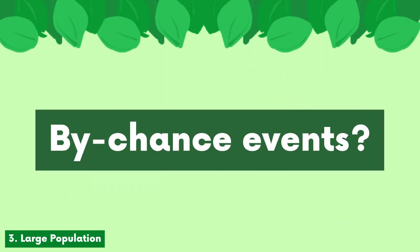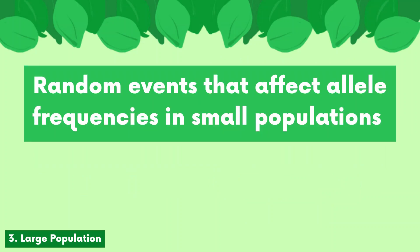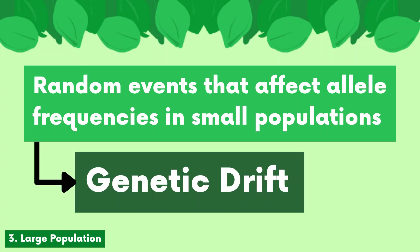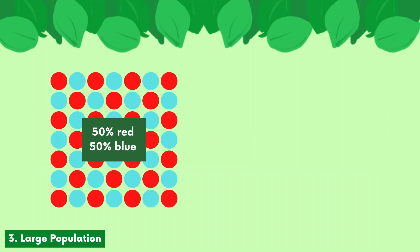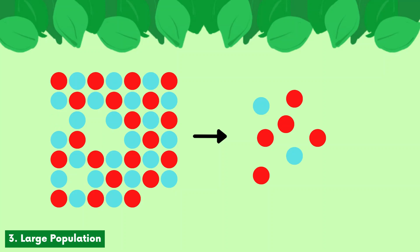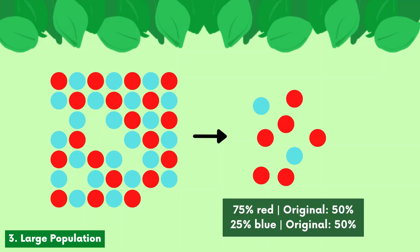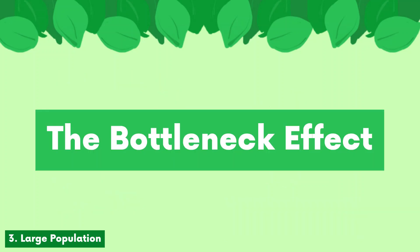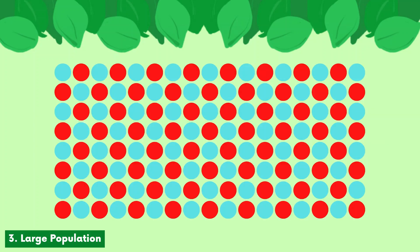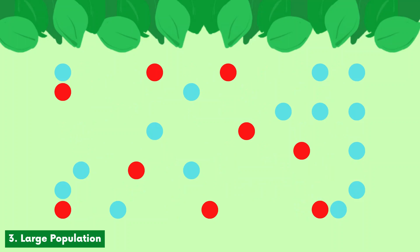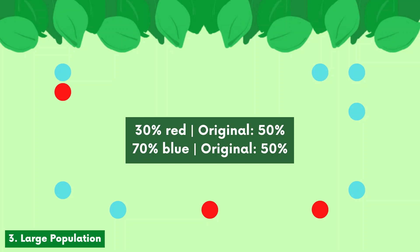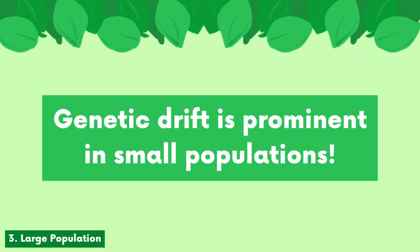By-chance events are random events that affect allele frequencies in small populations — this is also known as genetic drift. There are two common types: the founder effect and the bottleneck effect. The founder effect occurs when a group of organisms from a larger population establishes a new population in another location; this new population may not be representative of the original and is likely to have different allele frequencies, disrupting Hardy-Weinberg equilibrium. The bottleneck effect occurs when by-chance events, usually a natural disaster, cause the population to dramatically reduce in size. The surviving organisms are completely random, and since the survivors are not representative of the original population, allele frequencies are changed, once again disrupting Hardy-Weinberg equilibrium. Genetic drift is most pronounced in small populations, which is why having a large population is a requirement for equilibrium.